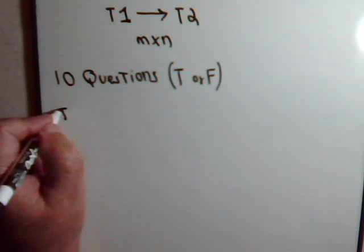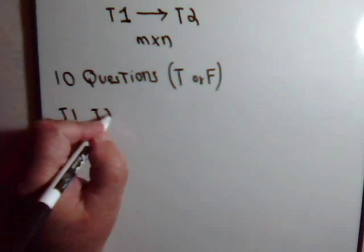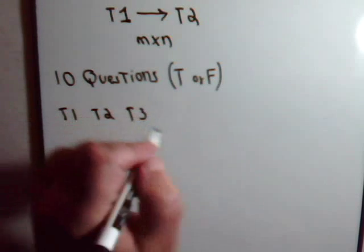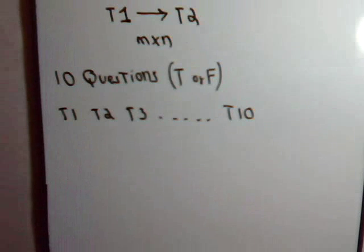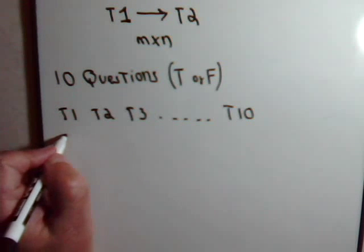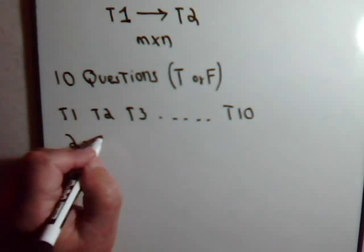So for each time you are posed with a question, you can obviously have true or false. So each question, task T1, T2, T3, going on now to T10. Each one of course is going to be performed two different ways.